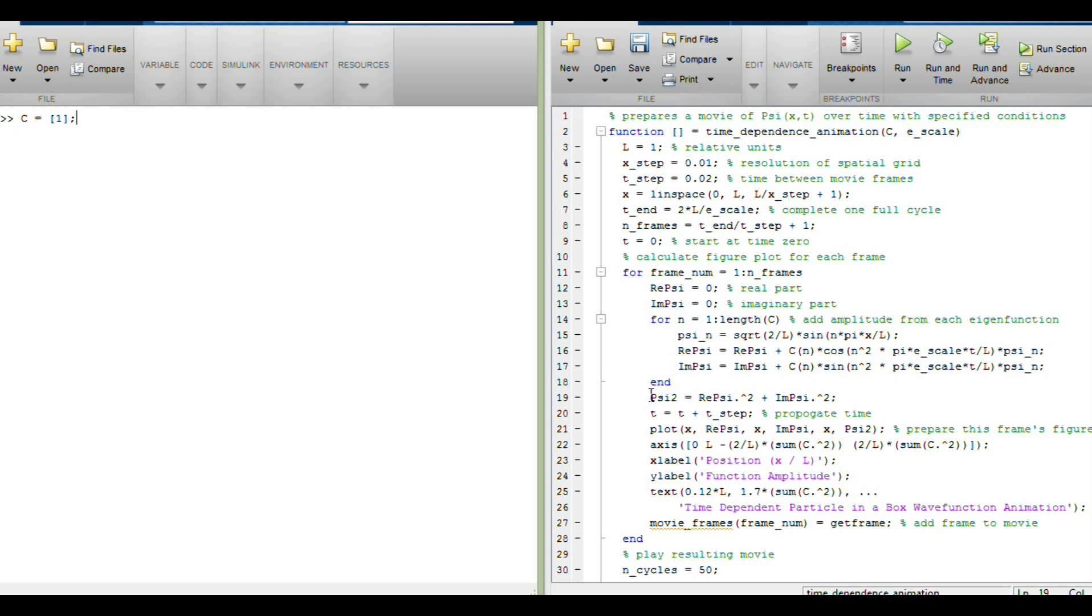And we're also going to plot the probability density function, which is the psi star psi, or absolute magnitude psi squared, which is the real part squared plus the imaginary part squared. So let's get started with this.